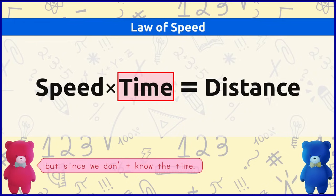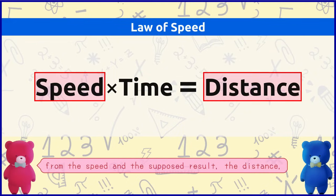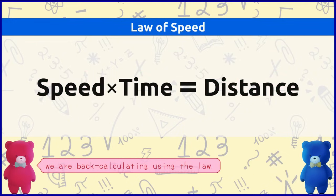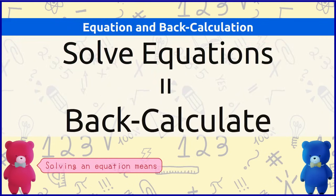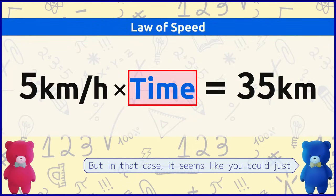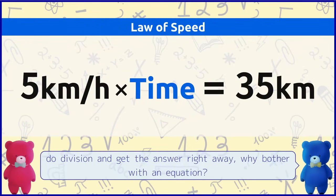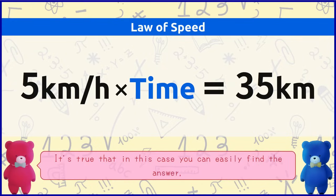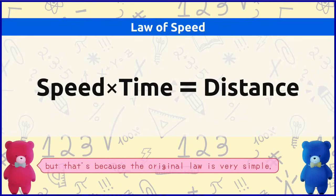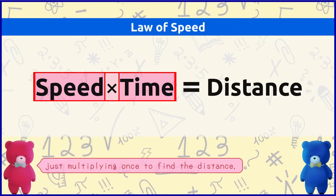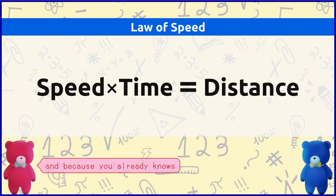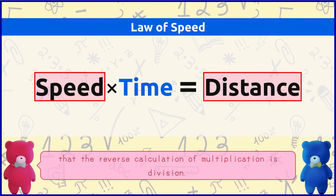That's right. This means that we were originally using the information of speed and time to find the distance. But since we don't know the time, from the speed and the supposed result — the distance — we are back-calculating using the law. Solving an equation means back-calculating using the law. But in that case, it seems like you could just do division and get the answer right away. Why bother with an equation? It's true that in this case you can easily find the answer, but that's because the original law is very simple — just multiplying once to find the distance — and because you already know that the reverse calculation of multiplication is division.